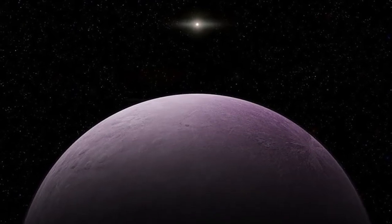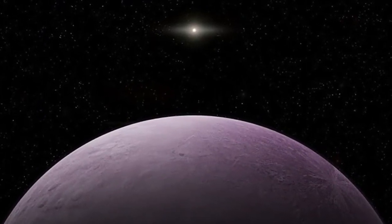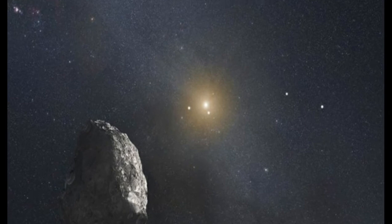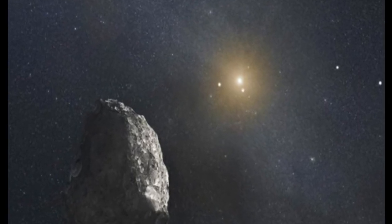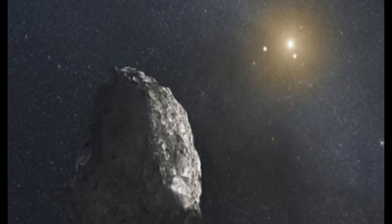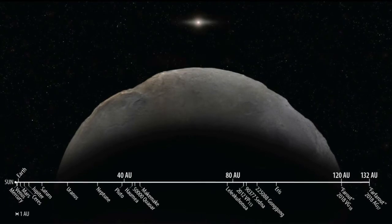The most distant known object in the solar system is now confirmed. Far Far Out, a large chunk of rock found in 2018 at a whopping distance of around 132 astronomical units from the sun.